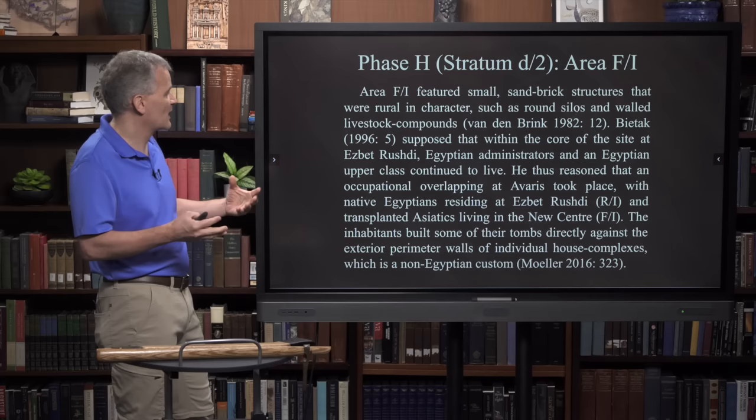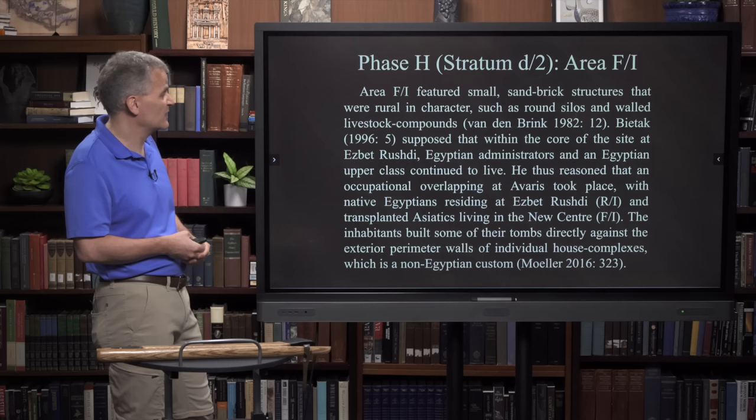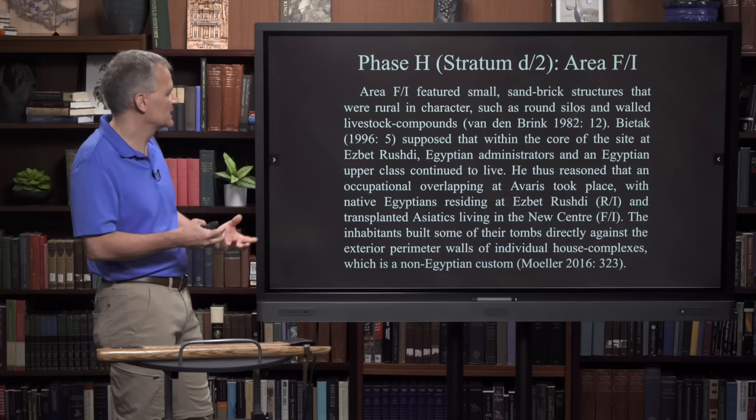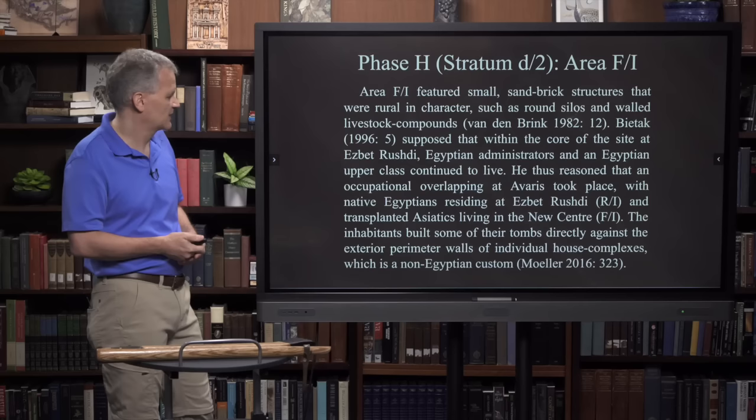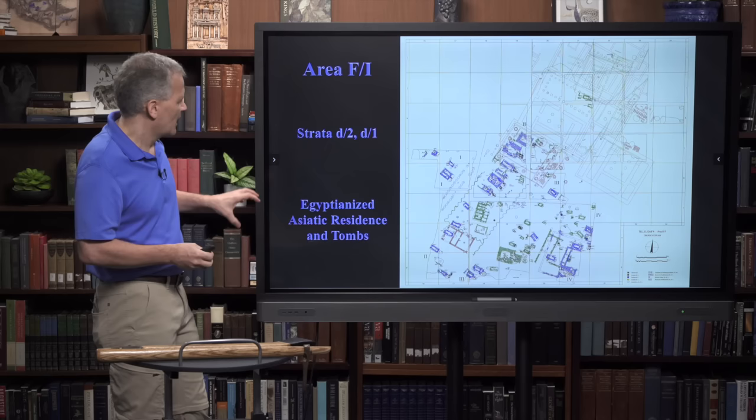This phase featured small sand-brick structures that were rural in character, such as round silos and walled livestock compounds. Bietak supposed that within the core of the site at Esbet Rushdie, Egyptian administrators and upper-class Egyptians continued to live. He reasoned that occupational overlapping took place with native Egyptians residing at Esbet Rushdie and transplanted Asiatics living in the new center - Egyptians and Asiatic Israelites living at the site at the same time.